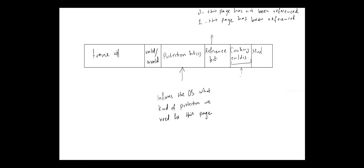The last bit is the modified bit, sometimes called the dirty bit. The modified bit tells the operating system whether the page has been modified or not. If the page was modified, then its copy in memory is different from its copy in the backing store. In such cases, if we perform write operations on a page, this bit should be switched to 1, meaning that this page is dirty or has been modified. The modified bit is helpful if we choose this page as a victim for replacement — if it has not been modified, we do not need to swap it out to the backing store since the copy in memory and in the backing store are the same.